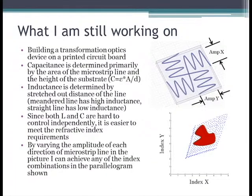So I'm still working on this because it's not practical to have 10,000 inductors and capacitors. But it is practical to have continuous traces on a printed circuit board. So here on the right, you can see the structure I have. I vary the amplitude y and amplitude x. And I get this blue parallelogram here, all the different index combinations from this structure. The idea is that if the red blob represents the index combinations I need to build this transformation optics design, then I would be able to build it.